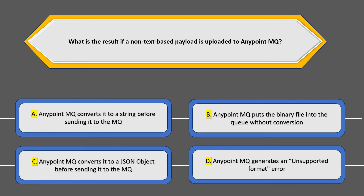The question we are going to discuss in this video is: what is the result if a non-text-based payload, such as a binary payload, is uploaded to AnyPoint MQ? The options are: A) AnyPoint MQ converts it to a string before sending it to MQ; B) AnyPoint MQ puts the binary file into the queue without conversion; C) AnyPoint MQ converts it to a JSON object before sending it to MQ; and D) AnyPoint MQ generates an unsupported format error.